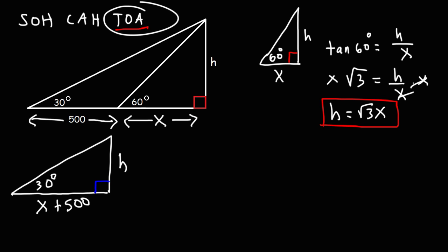So once again, we're going to use tangent. So we could say that tangent of 30 degrees is equal to the opposite side. Opposite to 30 is still h divided by the adjacent side, which is now x plus 500.